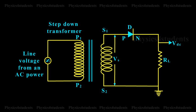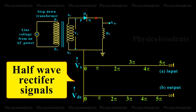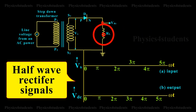During the positive half cycle of the input AC voltage VS, S1 will be positive and the diode is forward biased and hence it conducts. Therefore, current flows through the circuit and there is a voltage drop across RL. This gives the output voltage as shown in the animation.